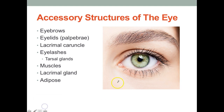The lacrimal caruncle produces substances that keep the eye lubricated. There are sebaceous glands and modified sweat glands in this area that produce that substance. When you wake up in the morning with those sandy things in your eyes, those are produced by the lacrimal caruncle — they tend to accumulate at nighttime while you're sleeping.